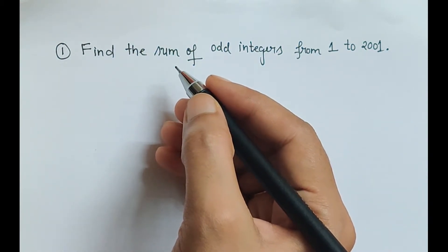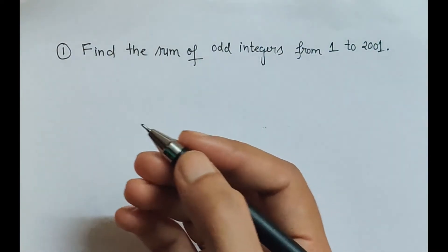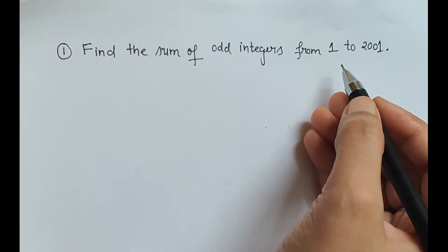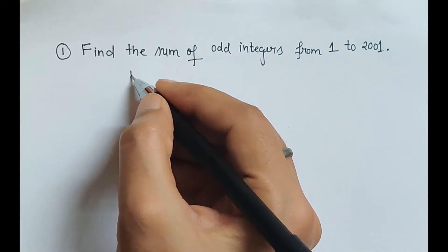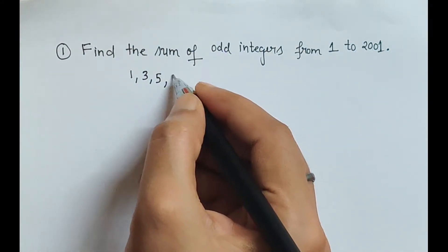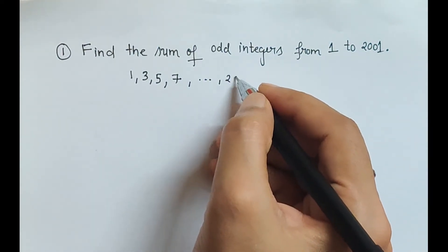Before we write that formula, let us first write down the sequence of the question. What sequence we are getting? Odd integers from 1 to 2001. So let's write the odd integers: 1, next odd is 3, 5, 7, and likewise there are many such odd integers that come between 1 and 2001.